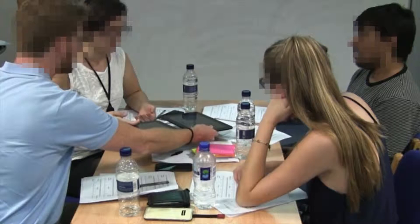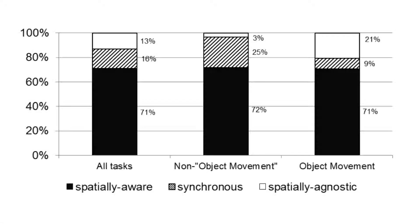In phase 1, we elicited gestures for typical mobile cross-device tasks from four focus groups. The results show that 71% of the elicited gestures were spatially aware, and that participants strongly associated cross-device tasks with interacting and thinking in space.